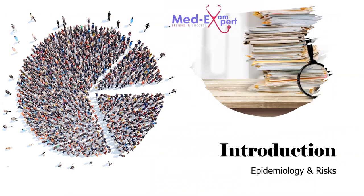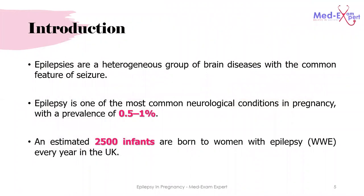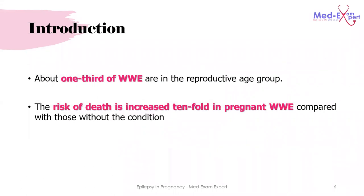Epilepsies are a heterogeneous group of brain diseases with the common feature of seizure. Epilepsy is one of the most common neurological conditions in pregnancy, with a prevalence ranging from 0.5 to 1 percent. It is estimated that there are 2,500 infants born to women with epilepsy every year in the United Kingdom.